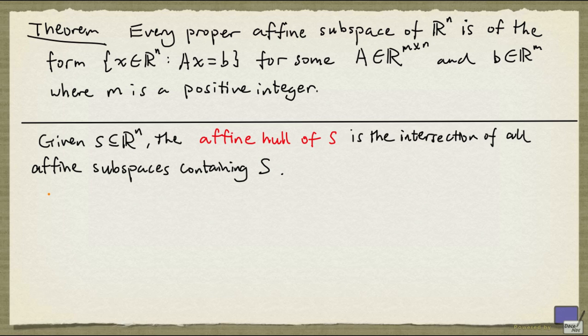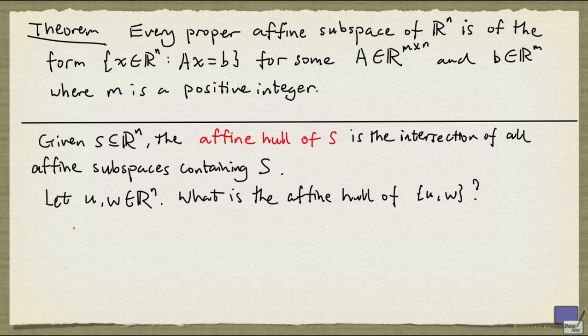Now let's see what is the affine hull of two points in R^n. Because the affine hull is going to be an affine subspace, we know that the affine hull of U and V must be of the form P plus V, where P is an element of R^n and V is a vector subspace of R^n. We can set P equal to either U or W, and let's set P equal to U.